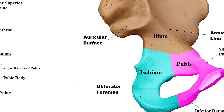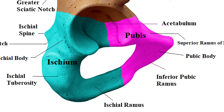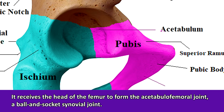These three hip regions meet in and around the acetabulum, which is the deep socket of the hip bone. The acetabulum is easily recognized in a lab exercise and it receives the head of the femur to form the acetabulo-femoral joint, a ball and socket synovial joint. The word acetabulum sounds like acid tablets to me — the word literally means vinegar cup, so I remember it as the little cup of vinegar I need to swallow my acid tablets.